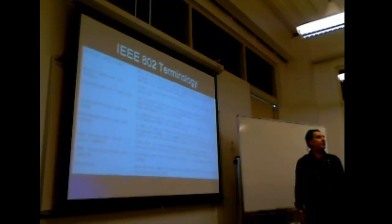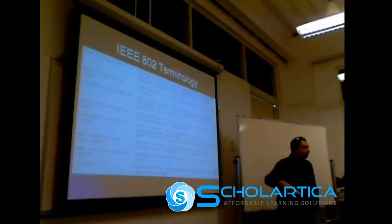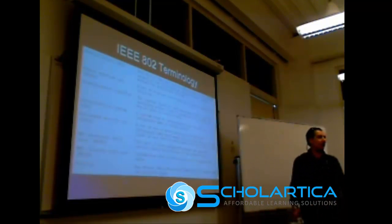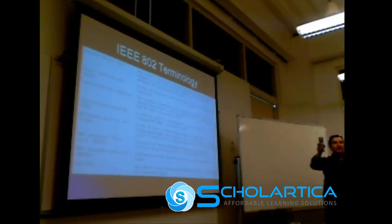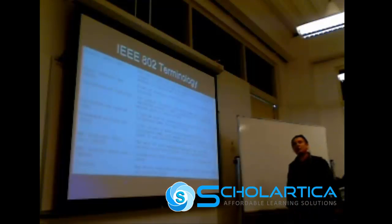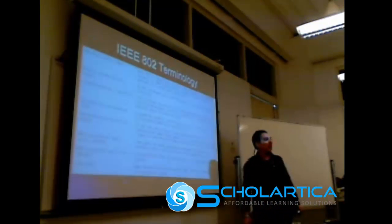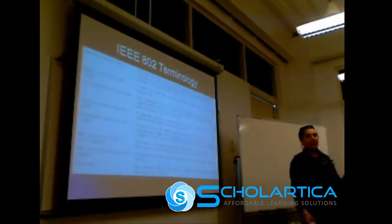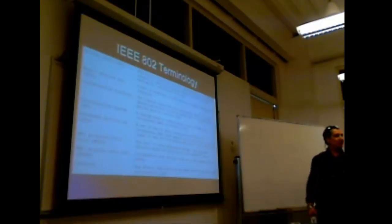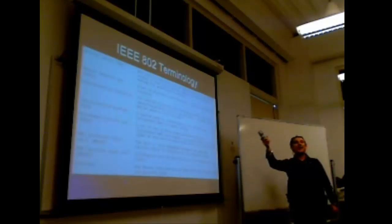And we're going to have basic service set. In basic service set, what we're going to have is one AP and a bunch of stations, a bunch of wireless laptops. Let's put it that way. One router. Imagine your home. Your husband has a laptop, your wife has a laptop, your kids has a laptop, or you have one desktop as well. All of them are connected to one AP.